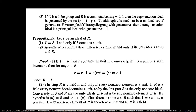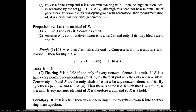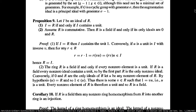We have a few more properties of ideals — some propositions. Your ideal is going to be equal to the ring if and only if the ideal contains a unit. And second, if your ring is commutative, then R is going to be a field if and only if the only ideals are zero and R.